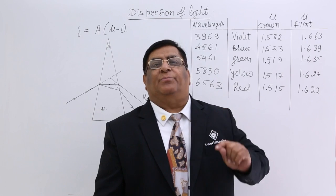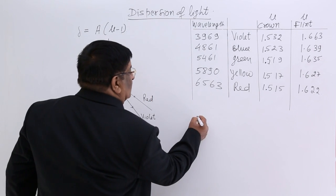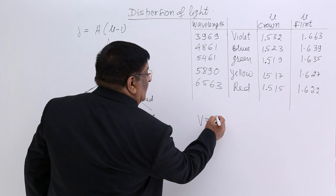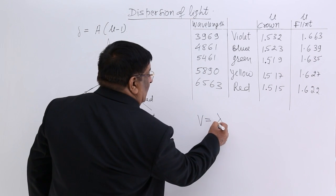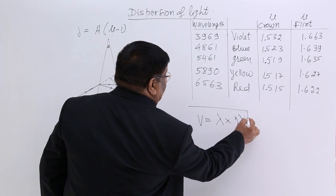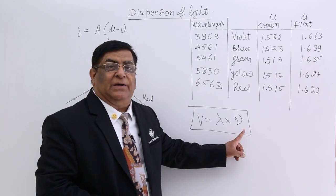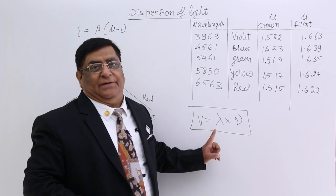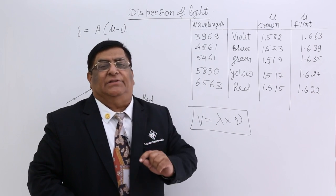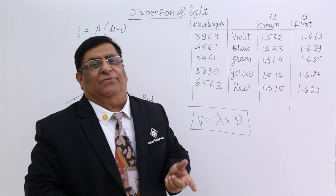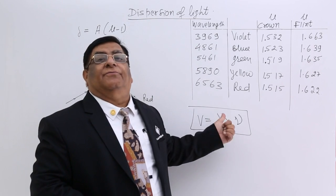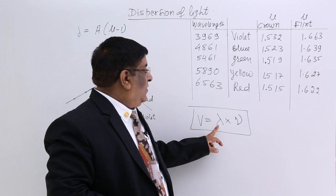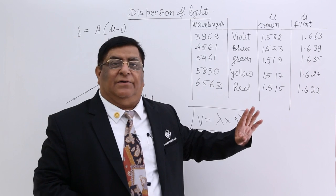The light travels with a particular speed V, and in a wave, V is wavelength lambda multiplied by frequency. If the frequency of different light is different, naturally lambda will also be different. So initially, we think that the different colors of light are due to different wavelengths, and because of the different wavelengths, the colors are different.